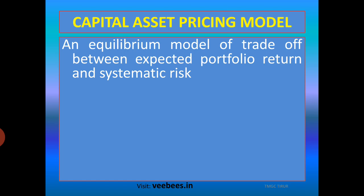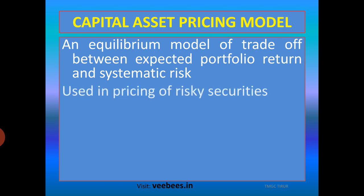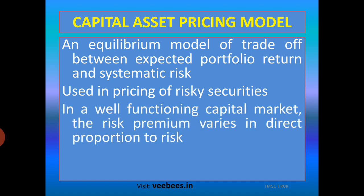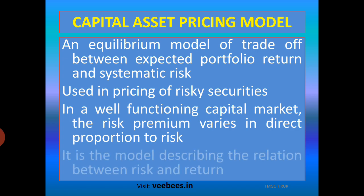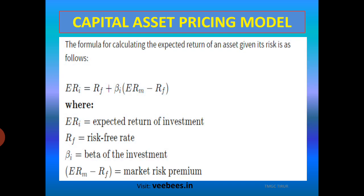The return of a portfolio and its systematic risk are combined and we arrive at an equilibrium level under CAPM. It is used for the purpose of pricing risky securities. If a security is having high risk, we use this technique to price the securities and measure whether they are undervalued or overvalued. In a well-functioning capital market, the risk premium always varies in direct proportion to risk — high risk means high risk premium, low risk means low premium. It is the model describing the relation between risk and return.